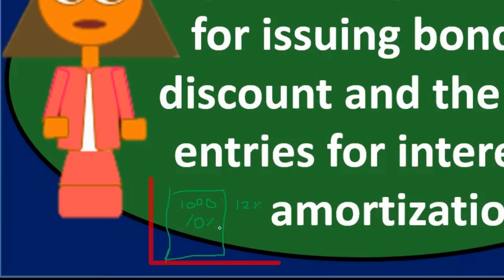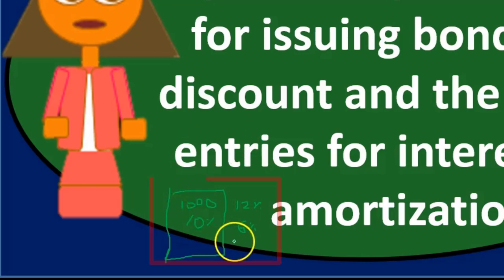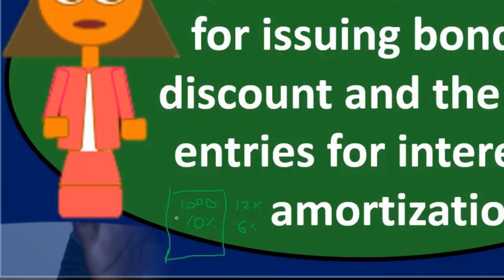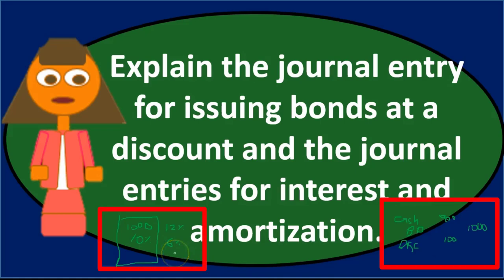It's like trying to rent an apartment for more than others are charging for the exact same type of apartment. So we'll have to sell it for less — that's a discount. On the other hand, if the market rate were only six percent, investors would want to buy our bond for a thousand because our rate is higher. At that point, we wouldn't sell for only a thousand — we'd want more, and we'd sell at a premium. A discount means the purchaser is buying for less than face amount; a premium means more than face amount — both driven by the difference in interest rates.